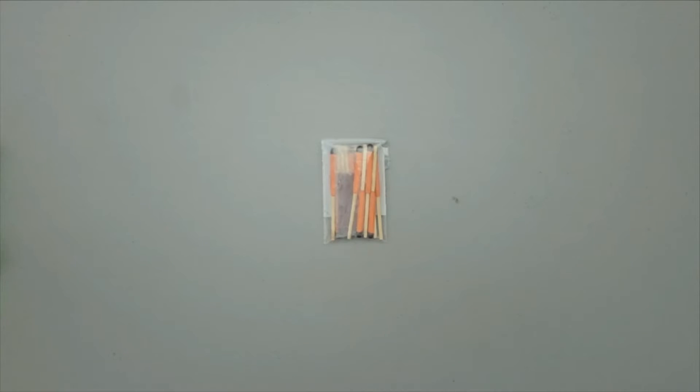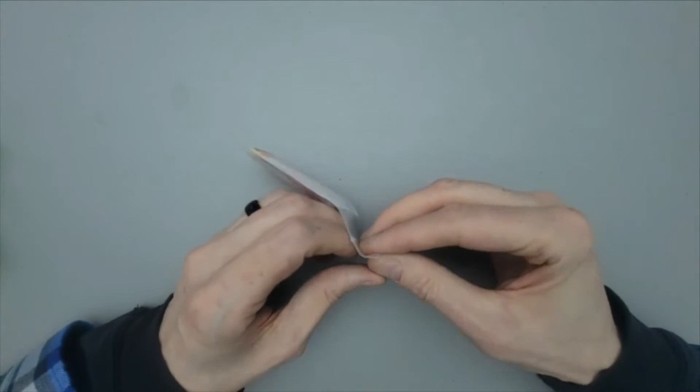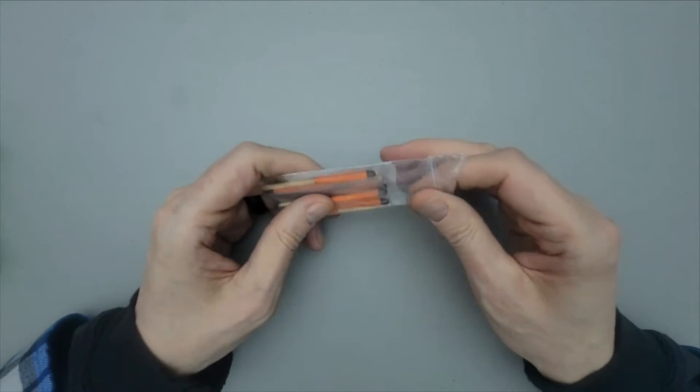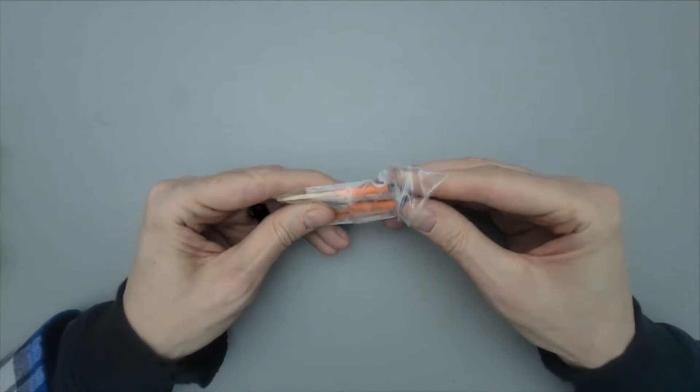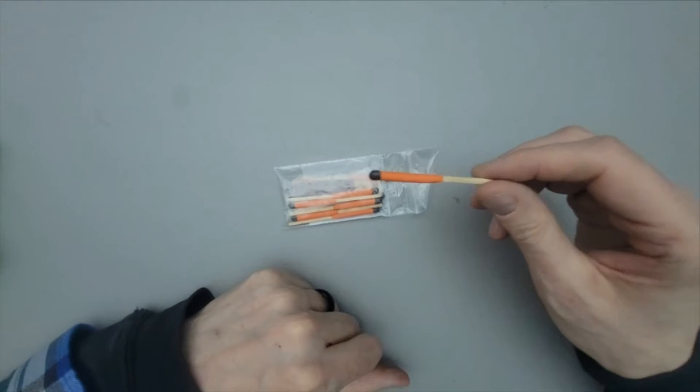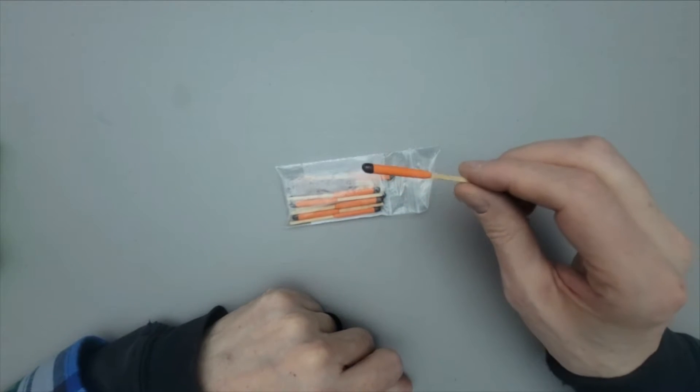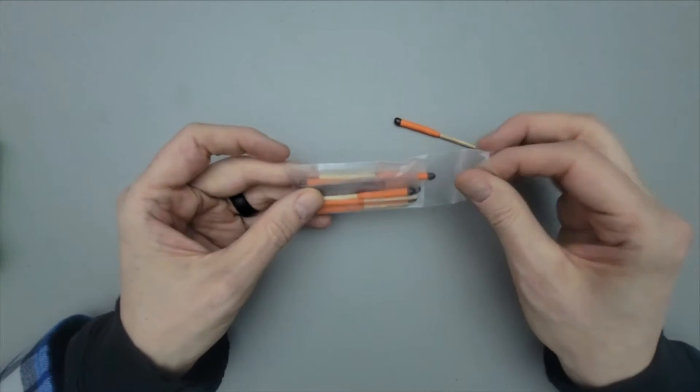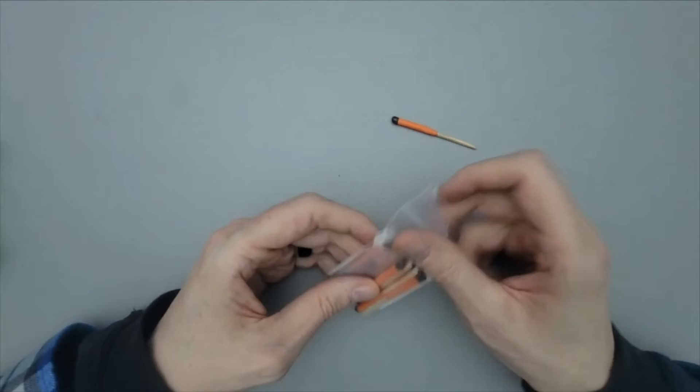The next fire making item are waterproof matches. These are sometimes called lifeboat matches or hurricane matches. These are made by UCO. They're very reliable. They have a pretty long burn time, probably about 10 or 15 seconds. They burn very hot. The nice thing about these matches is they burn even if they're completely submerged underwater.